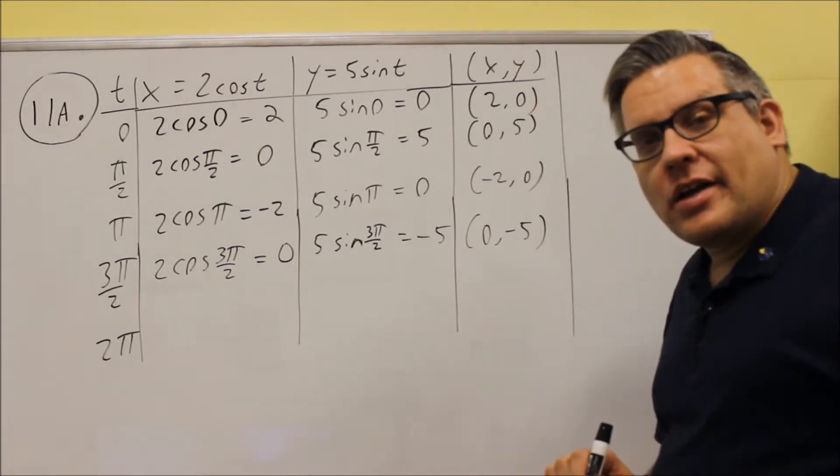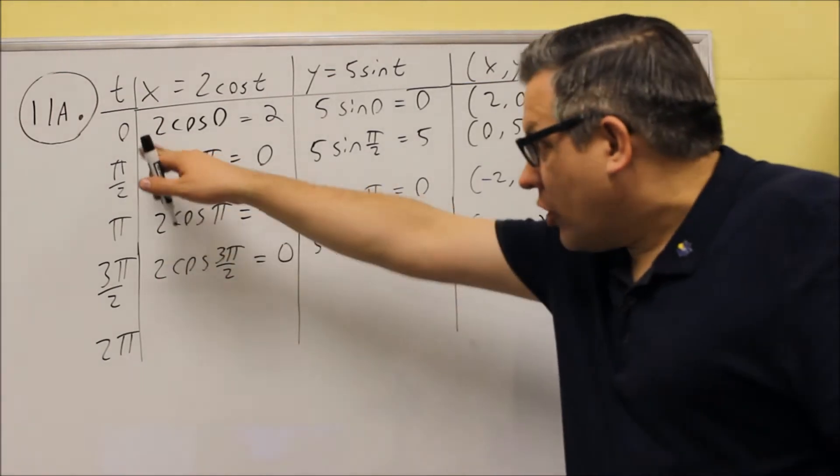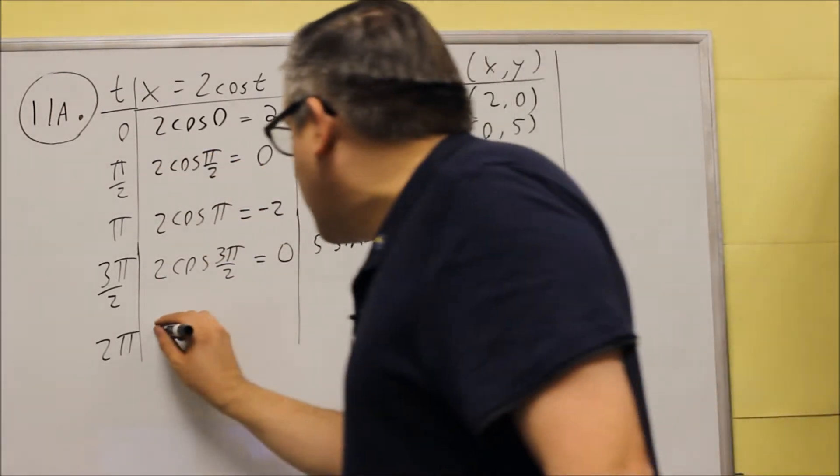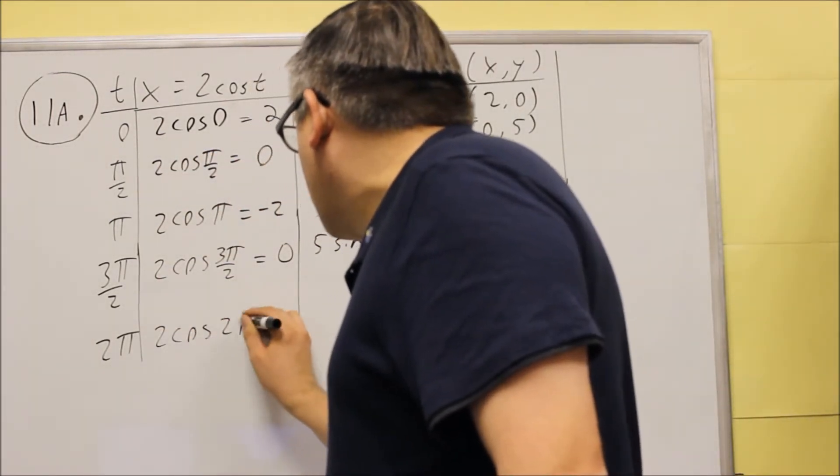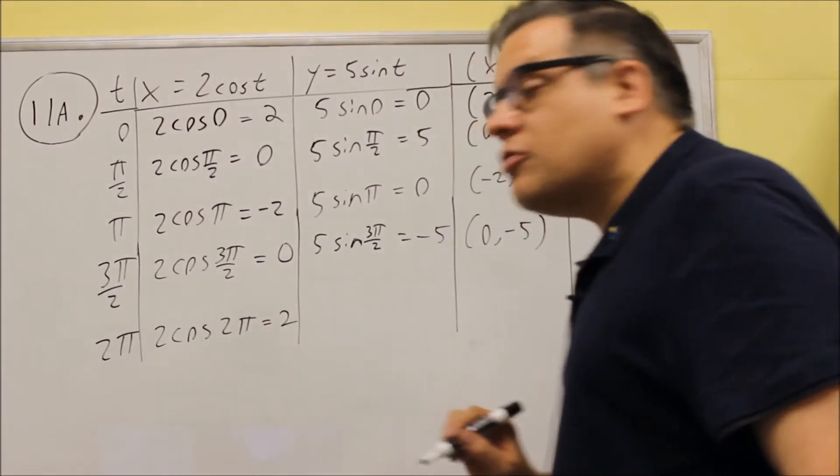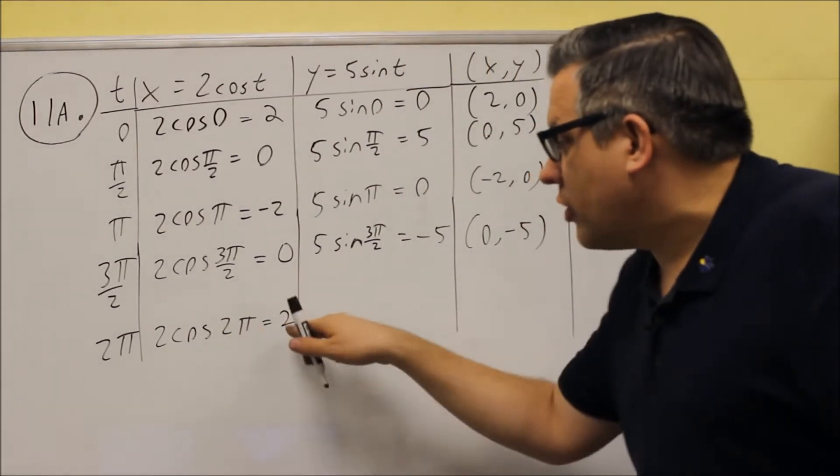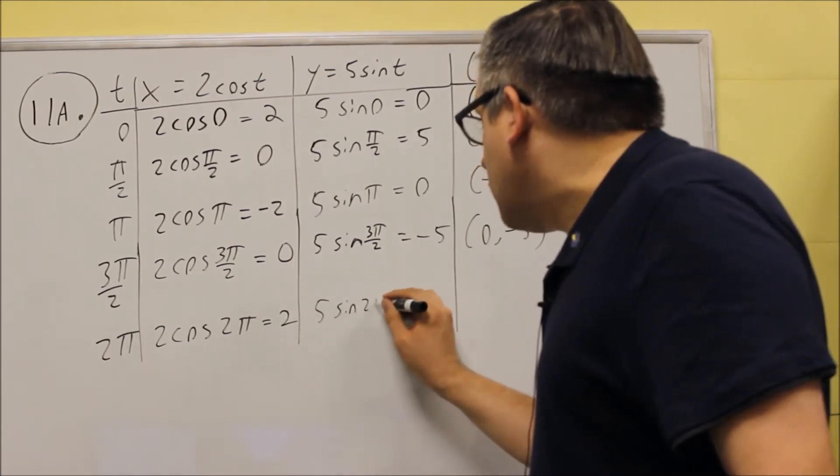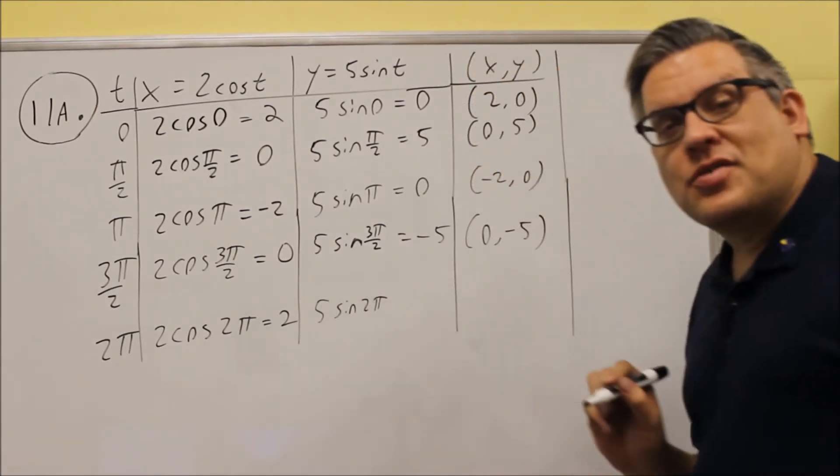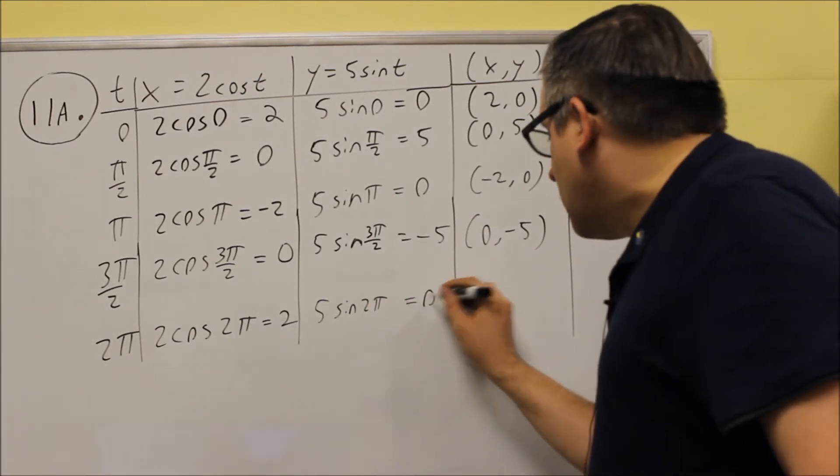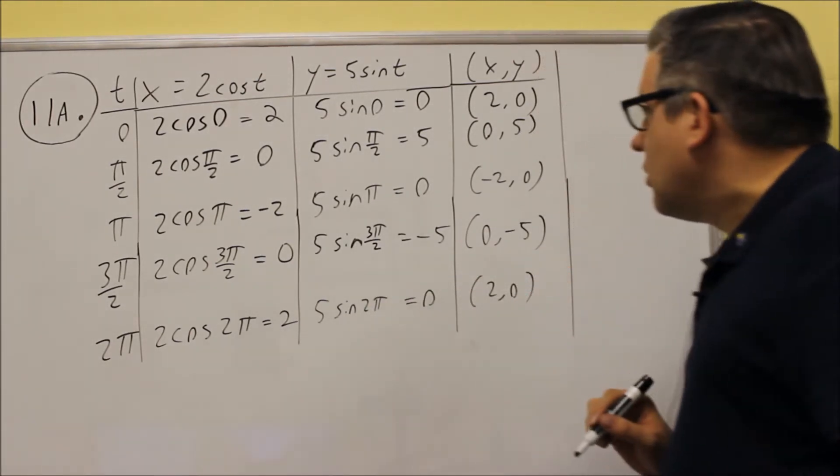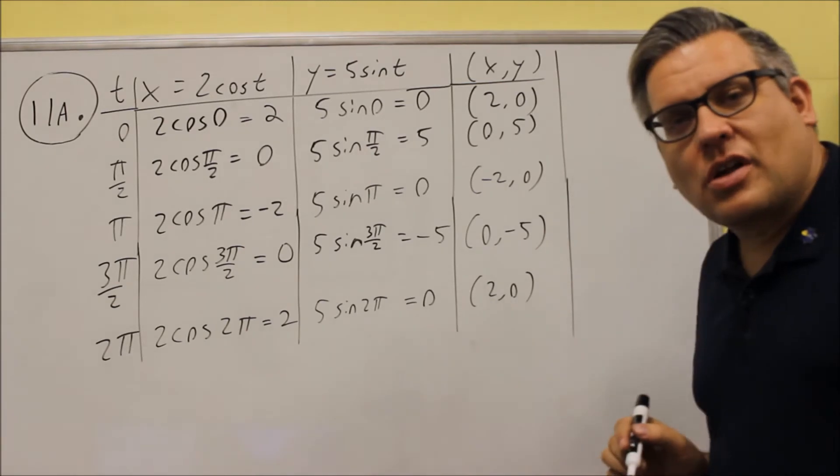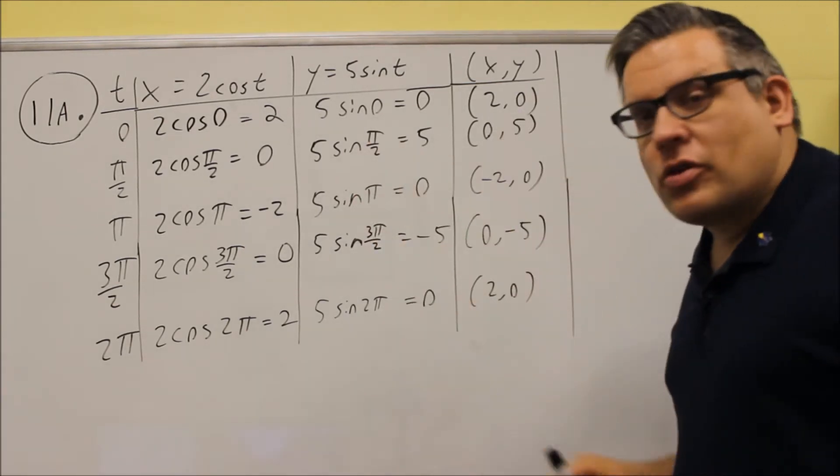Last thing is two pi. Two pi is really the same angle as zero, so you're going to get the same answer. So two cosine of two pi, that's going to be cosine of two pi is one. So two times one is two, and then you have five sine of two pi. The sine of two pi is zero, zero times five is zero, so two comma zero. So now these are our list of points that we have, and the table is now complete.